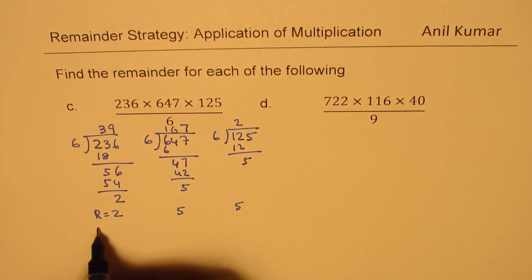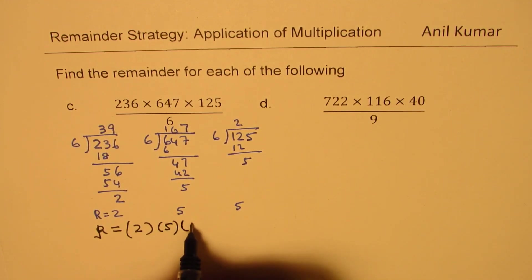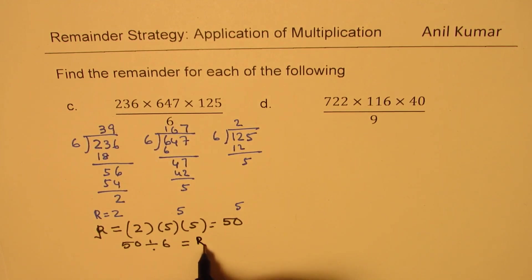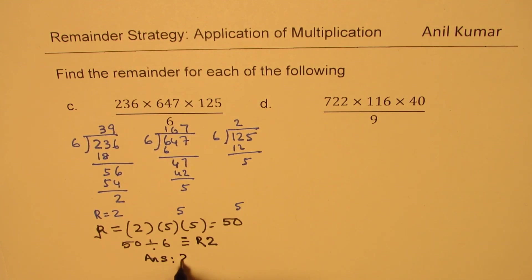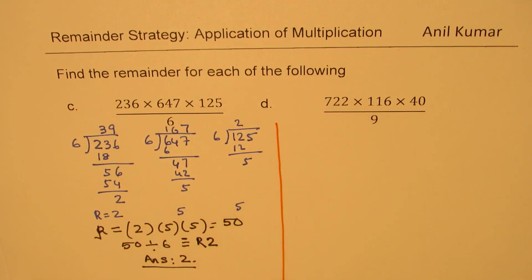Now, as we had thought about, the remainder should be equal to what? Final remainder should be 2 times 5 times 5, which is 50. Of course, 50 cannot be the remainder. So, you can divide 50 by 6 now. And then, what is the remainder? Well, 6 times 8 is 48. The remainder is 2. So, in this case, our answer is 2. Is that clear to you? So, the idea here is that you don't really have to multiply all the numbers and then divide. You can do it individually.